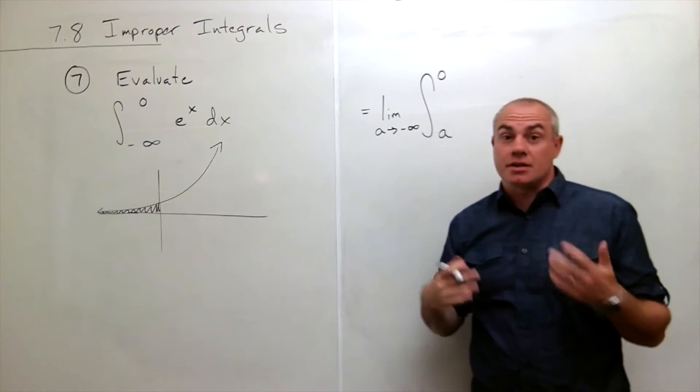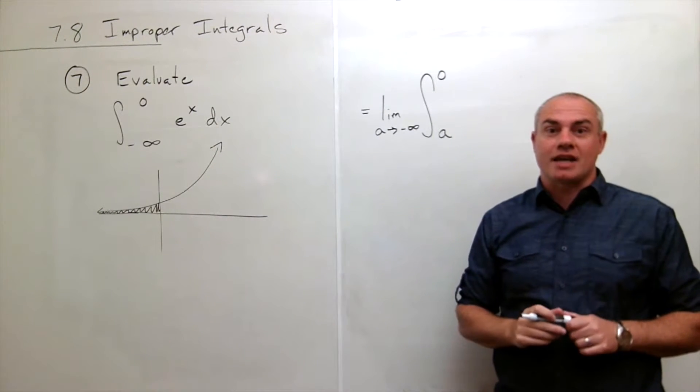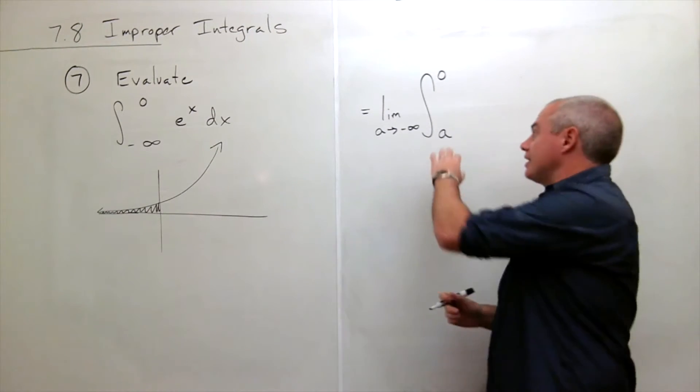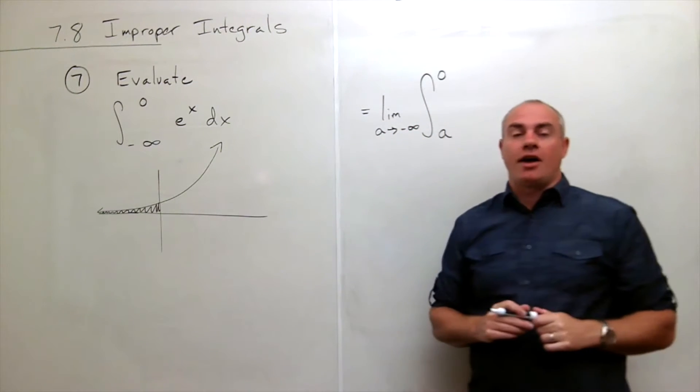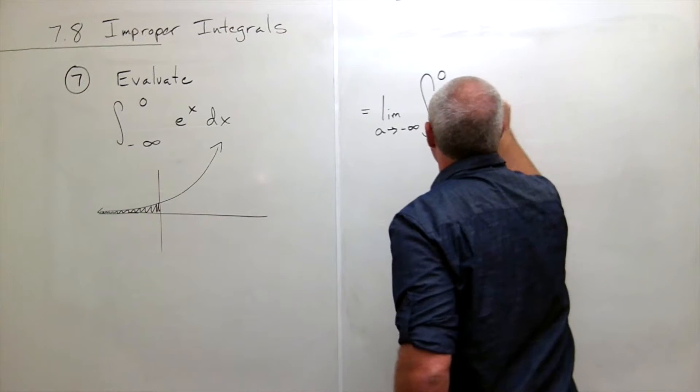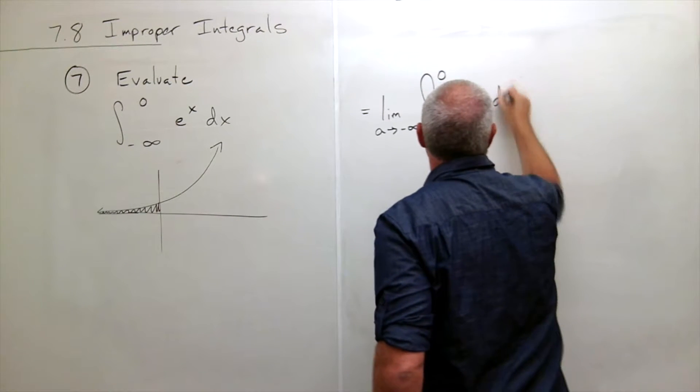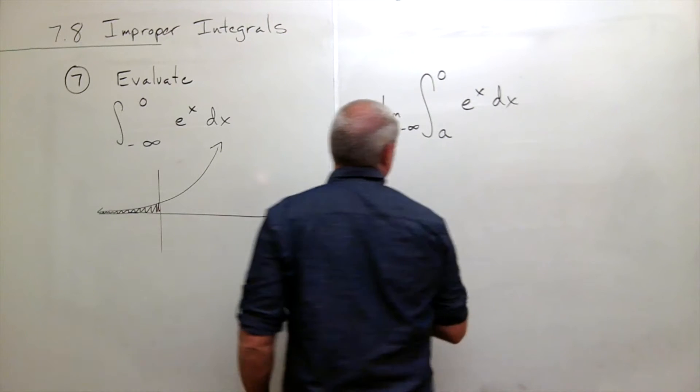So now this integral is a proper integral, I guess we could say, and it's okay to take this integral from a to zero, and then I'll just let a trail off to negative infinity. So inside I still have e to the x dx, and now I'm ready to integrate.